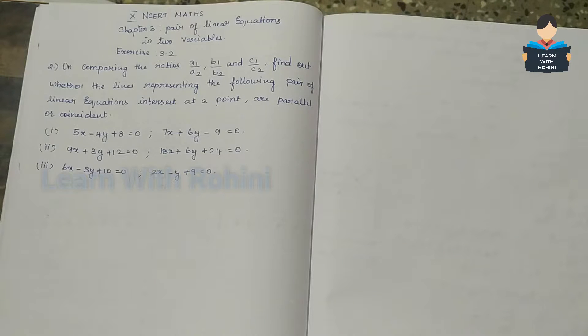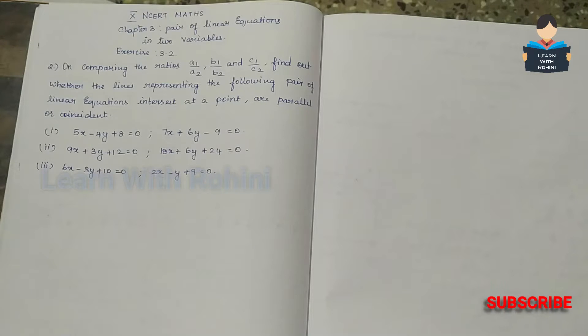Hello everyone, welcome to our channel. In this video, we cover Class 10 standard NCERT Maths, Chapter 3 — Pair of Linear Equations in Two Variables, Exercise 3.2, second sum.